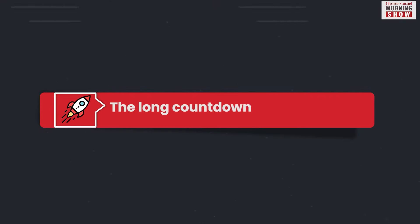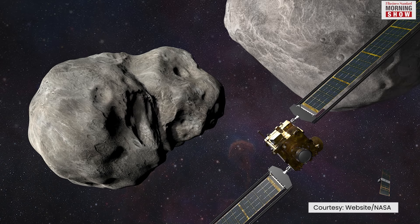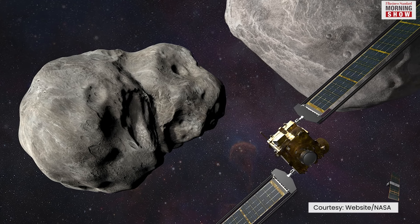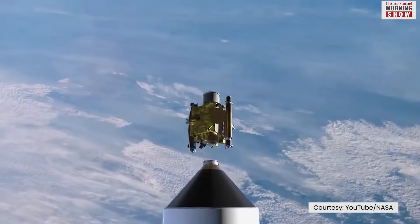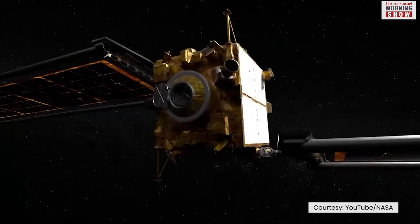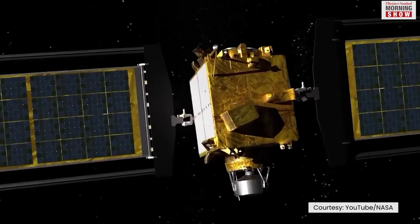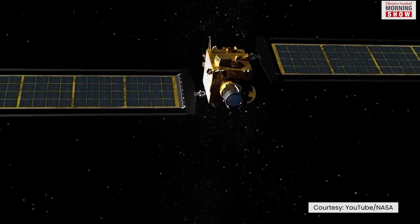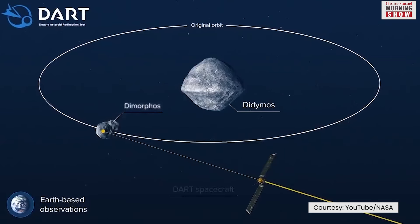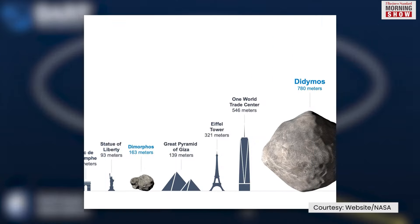The DART spacecraft was launched in November 2021 by a SpaceX rocket. Traveling at a speed of 24,000 kilometers per hour, the 570 kilogram spacecraft took almost 10 months to reach the target, an asteroid named Dimorphos.